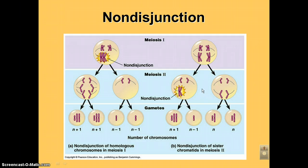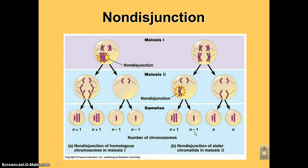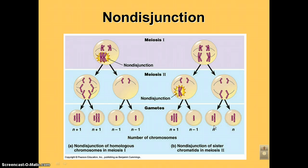If the non-disjunction occurs during meiosis II, only half of the gametes will have the wrong number of chromosomes. So one gamete is N plus 1 and another is N minus 1, but the second cell that didn't have non-disjunction produces two perfectly good gametes. Either way, with non-disjunction you're going to have the wrong number of chromosomes.